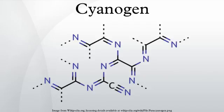History: Cyanogen was first synthesized in 1815 by Joseph Louis Gay-Lussac, who determined its empirical formula and named it. Gay-Lussac coined the word cyanogen from the Greek words for blue and forming, because cyanide was first isolated by the Swedish chemist Karl Wilhelm Scheele from the pigment Prussian blue. By the 1850s, cyanogen soap was used by photographers to remove silver stains from their hands. It attained importance with the growth of the fertilizer industry in the late 19th century and is still an important intermediate in the production of many fertilizers.